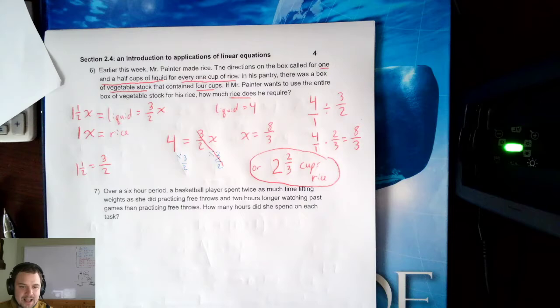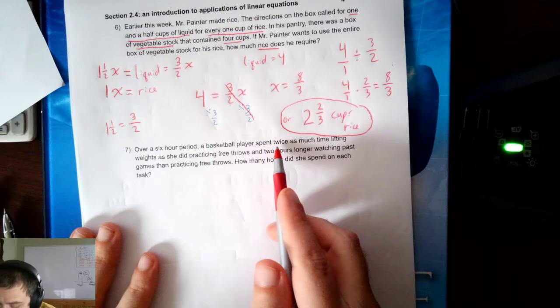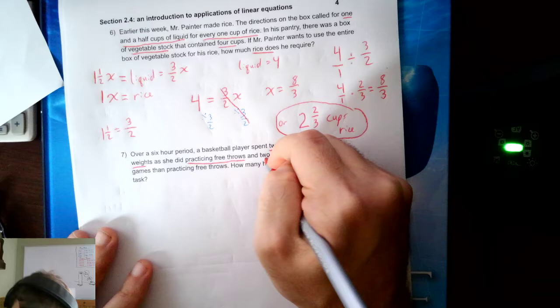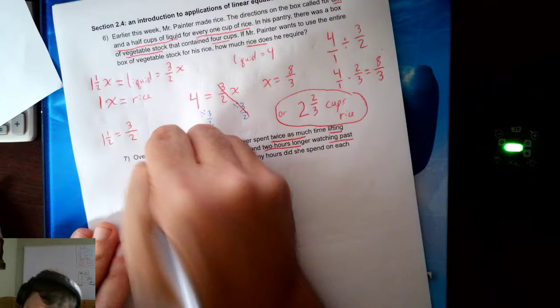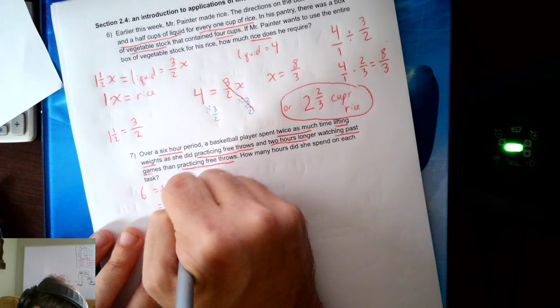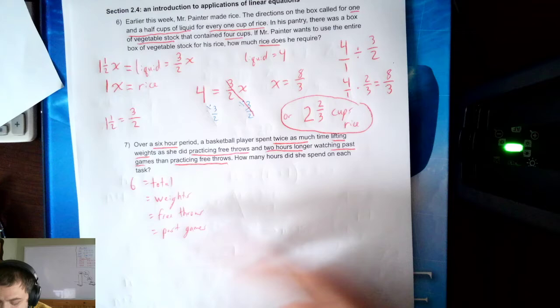Now, let's look at our 7th example. Over a 6 hour period, a basketball player spent twice as much time lifting weights as she did practicing free throws, and 2 hours longer watching past games than practicing free throws. How many hours did she spend on each task? I have a 6 hour period, so the total time she spent was 6 hours. And then I have some unknowns. She did weights, free throws, and past games.